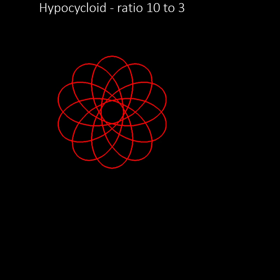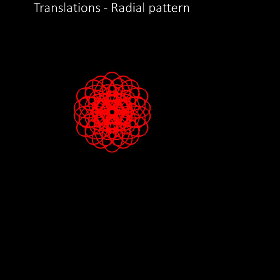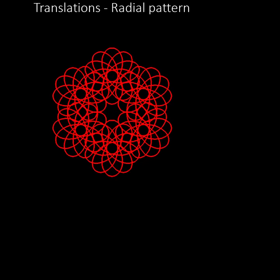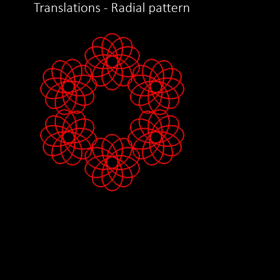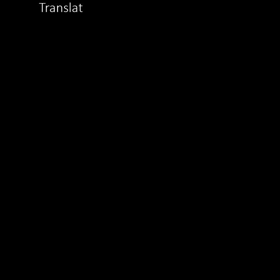One type of pattern is created by drawing multiple copies of a curve and moving each one to a different place on the screen. The mathematical term for moving an object from one place to another is a translation. Here we translate six copies of the curve along the spokes of an imaginary wheel to create a radial pattern. A different set of translations creates a grid pattern like this.